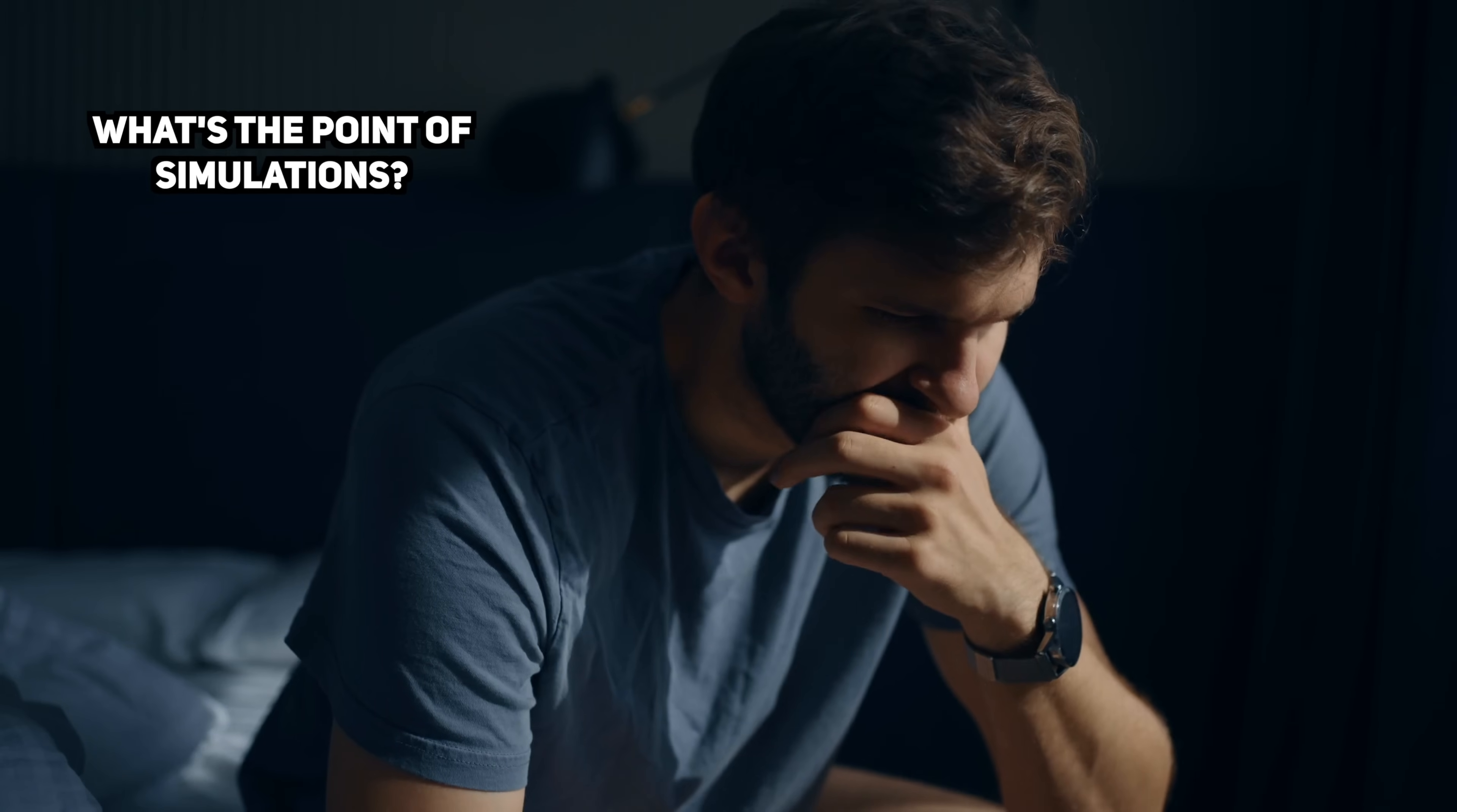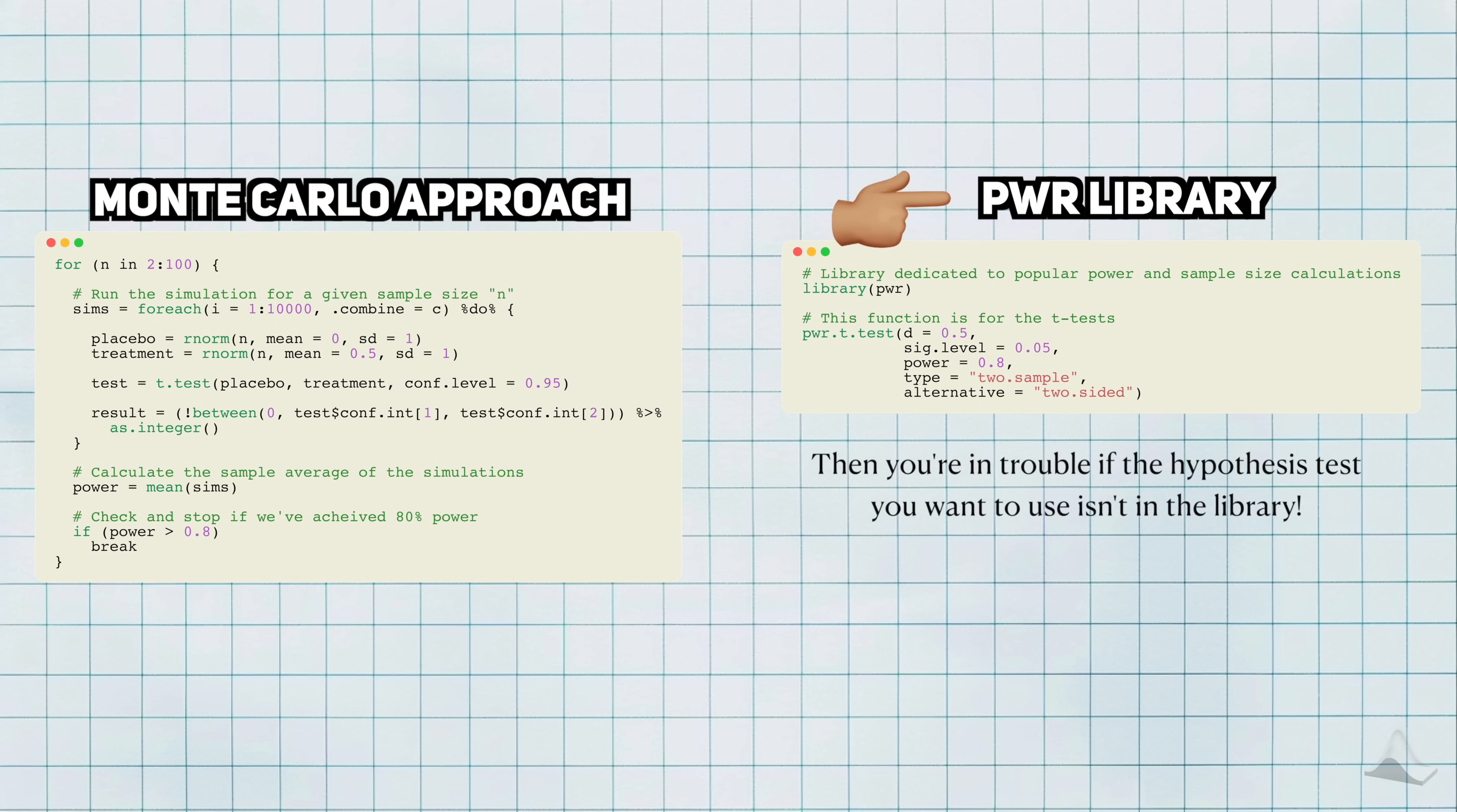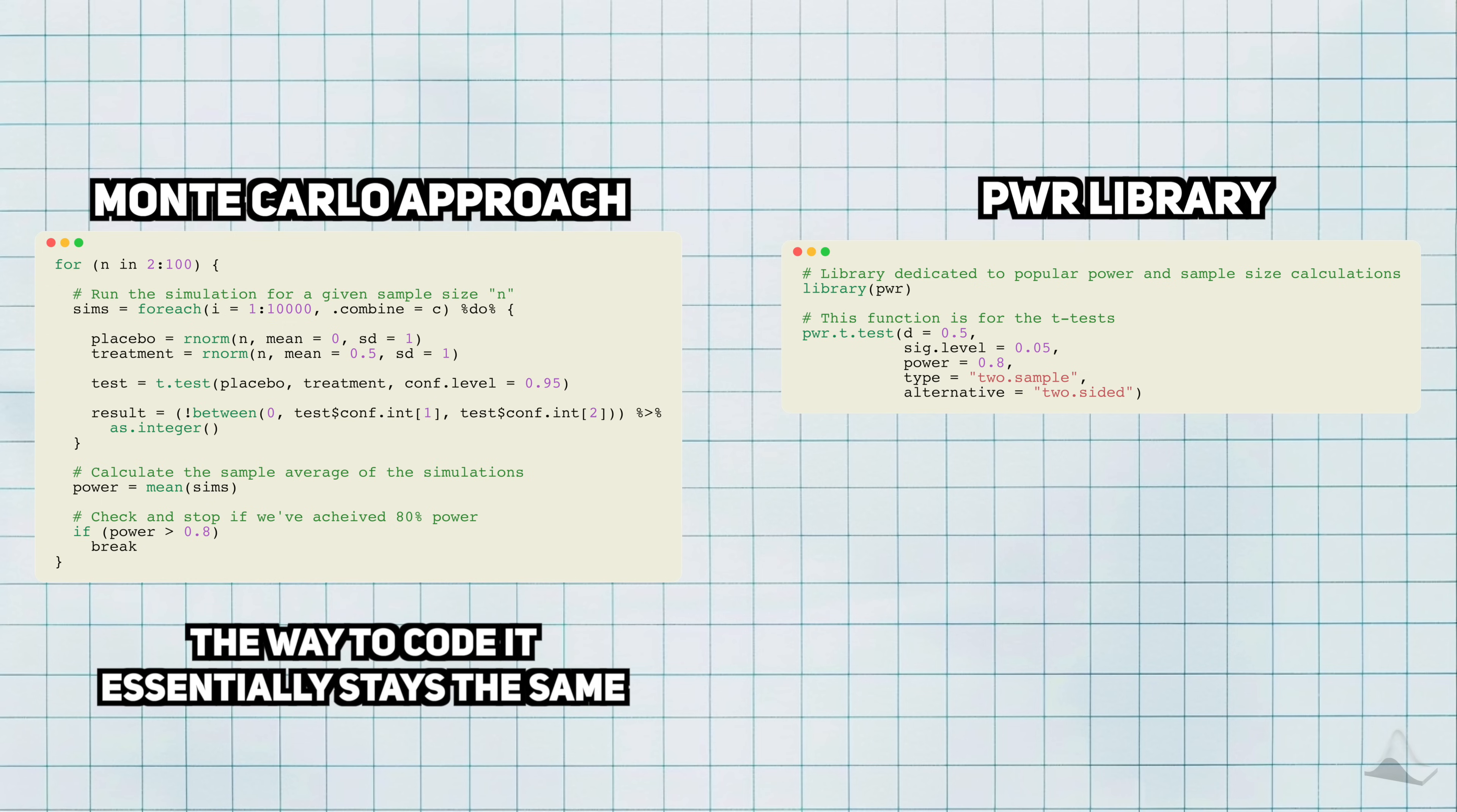You might be asking, what's the point of doing a simulation if there are functions that can do the same thing? In my opinion, it never hurts to have more options to do the same thing. If you relied entirely on the power library, then you're boned if you want to do a sample size calculation for a hypothesis test that isn't in the library. The Monte Carlo approach is more general, and you could apply it to different hypothesis tests or different ways to generate data. No matter what you choose, the framework is basically the same.